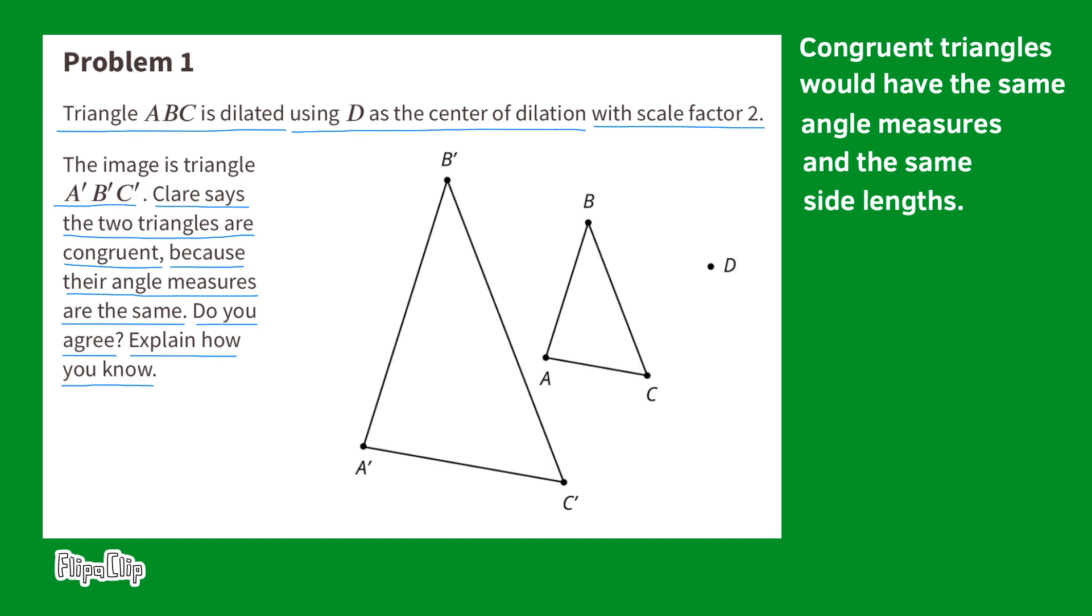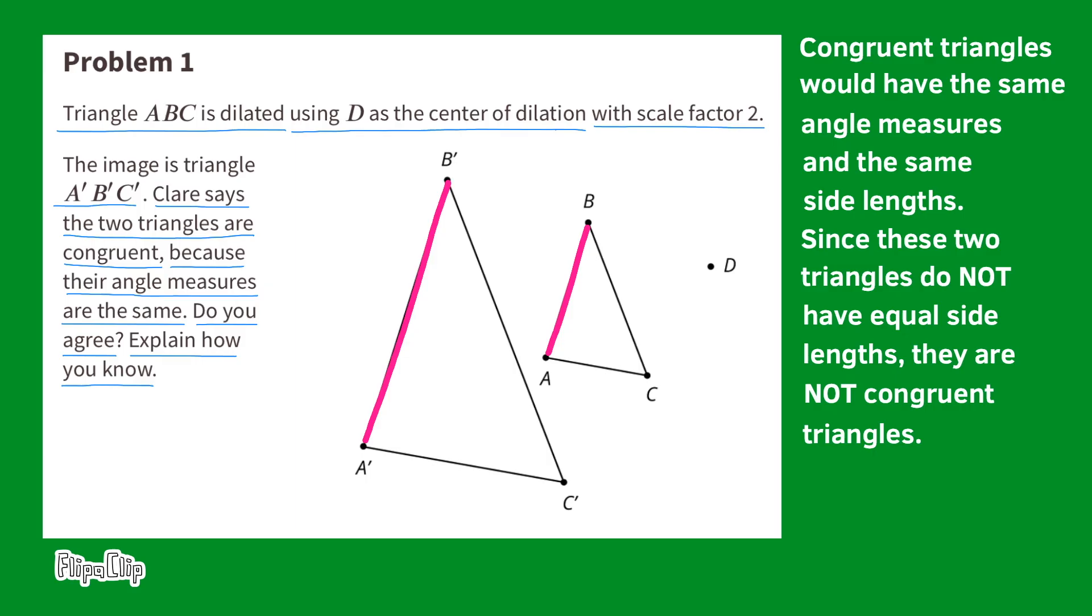Congruent triangles would have the same angle measures and the same side lengths. Since these two triangles do not have equal side lengths, they are not congruent triangles.